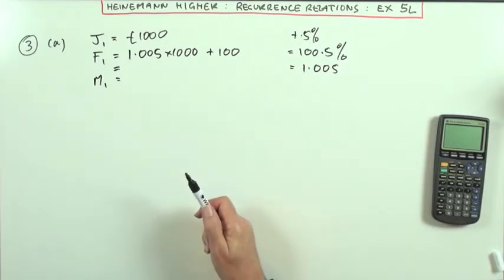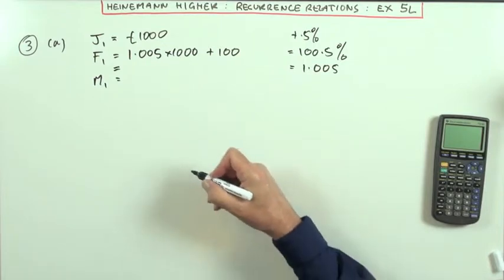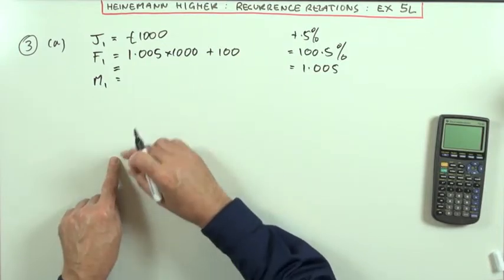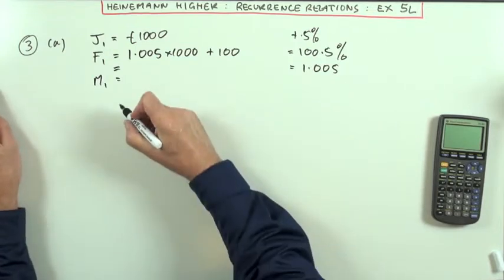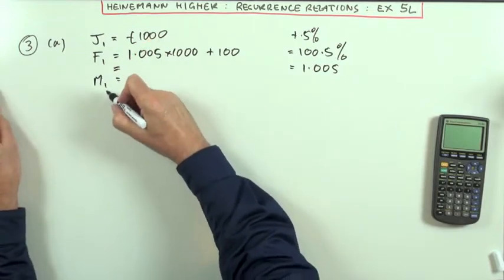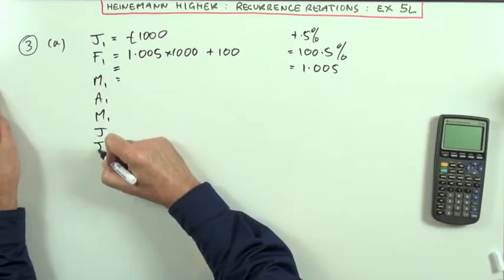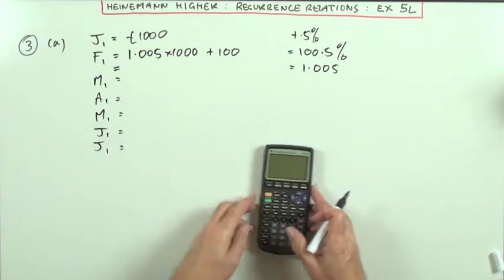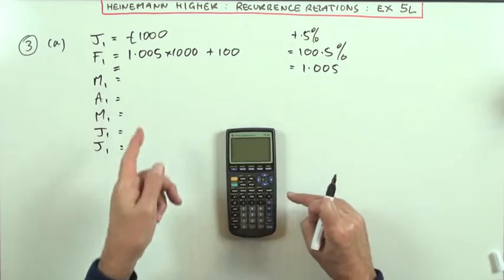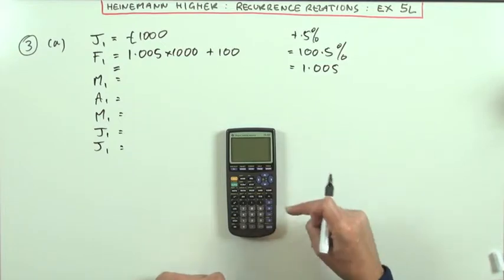Now, the question says, not what have you got on the 1st of a month, but on the 30th of June. So, I'm going to have to carry on down until I get to the 1st of July, and then taking off the 100 will put me back to the 30th of June. So, I'll write them all down. February-March, April-May, June-July. And to work these out, I'm going to use the calculator because it's the same calculation over and over again. It's a recurrence relation. You're always doing the same calculation to get the next term.